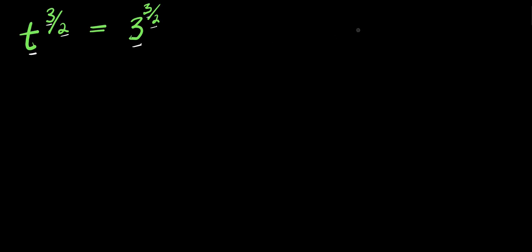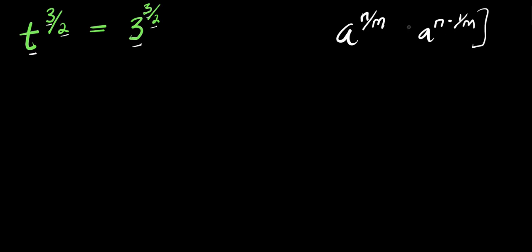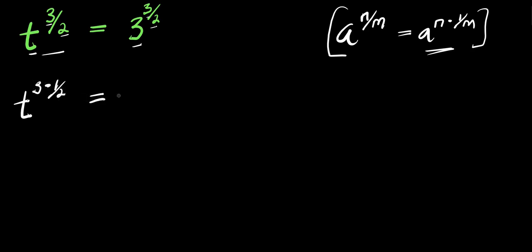Remember this identity: if I have a to the power of n divided by m, I can express this as a to the power of n times 1 over m. So applying this, we have t to the power of 3 times 1 over 2, and this equals 3 to the power of 3 times 1 over 2.